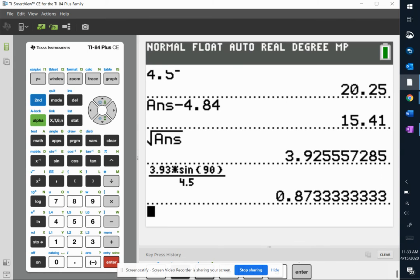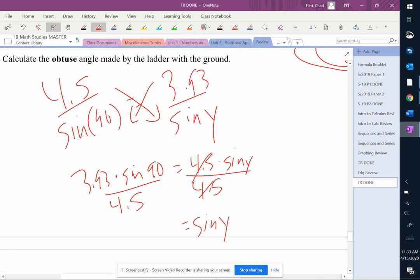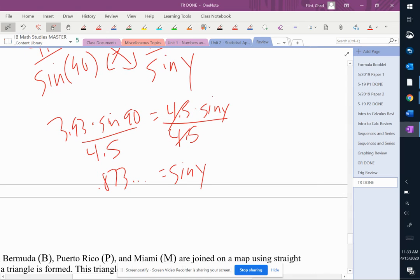So 3.93 times sine of 90 over 4.5 equals 0.873 repeating. So now I have to take my calculator and hit second sine to do sine inverse of 0.8733.